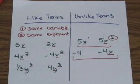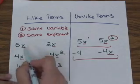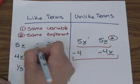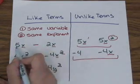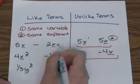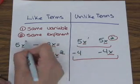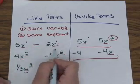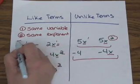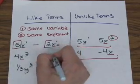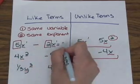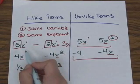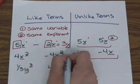Let's do a little example with a set of like terms. Say we have 5x minus 2x. Since they both have the same variable with the same exponent, they're like terms, so we can combine them. When combining terms, you're actually combining the coefficients. So 5 minus 2 gives me 3, and of course I write the variable x, giving 3x.